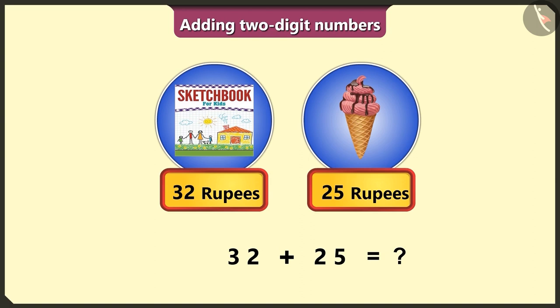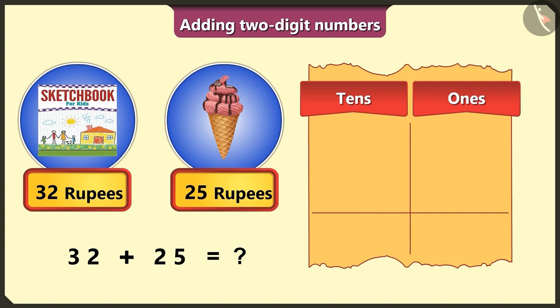You are absolutely right. First of all, from 32, write 3 in the ones box and 2 in the tens box.